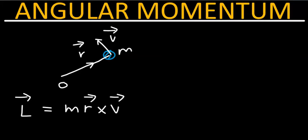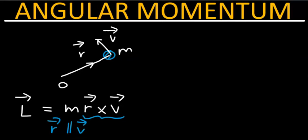As you can see from this equation, when the position vector is parallel or anti-parallel to the velocity vector, the angle becomes 0 degrees or 180 degrees accordingly, and the angular momentum vanishes.